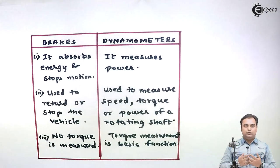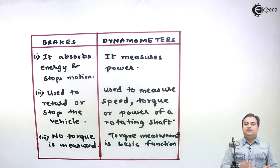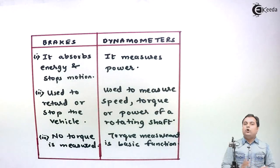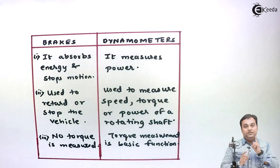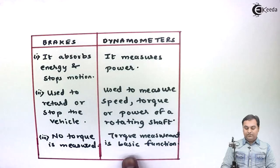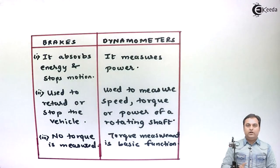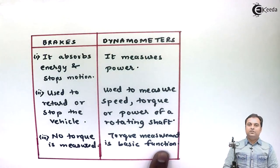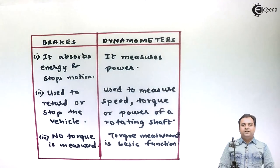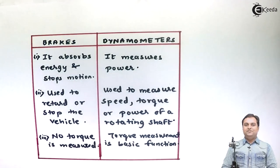Dynamometers are those devices which are used for measuring power. Either they can stop the moving shaft or they cannot stop the moving shaft, but the basic function remains that they should measure power, in other words torque. So with this I hope the concept of brakes and dynamometers is clear.